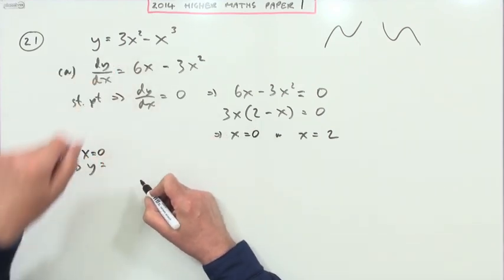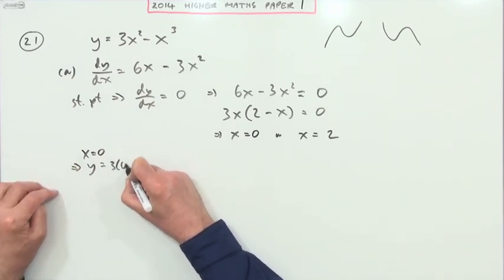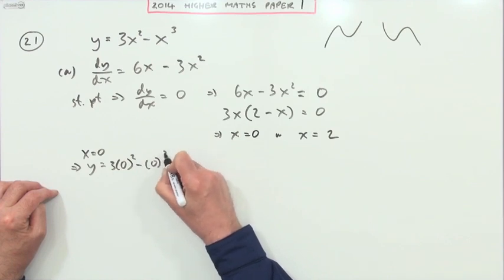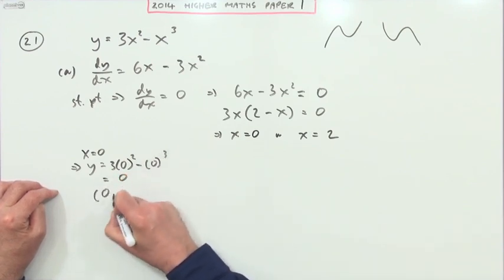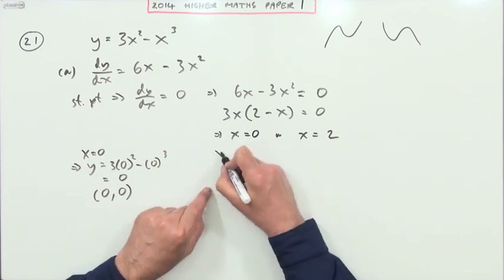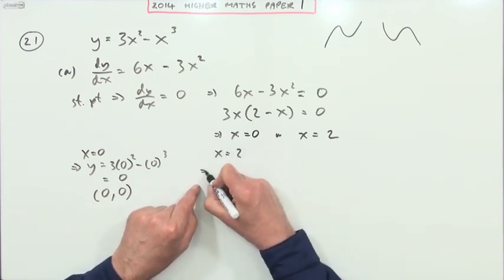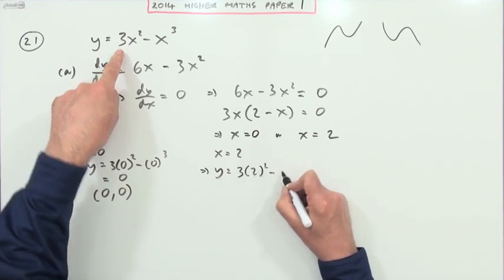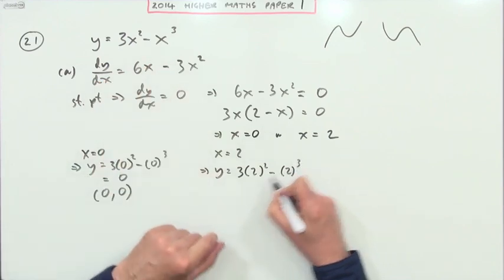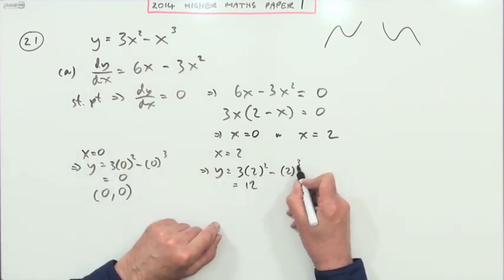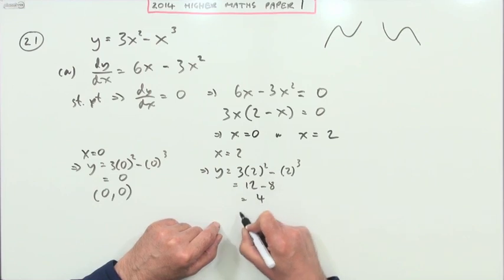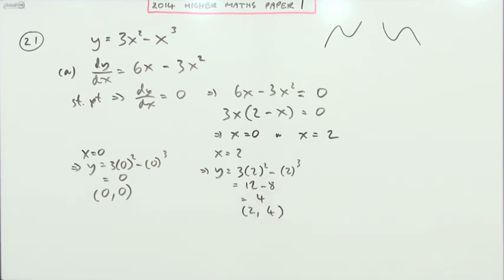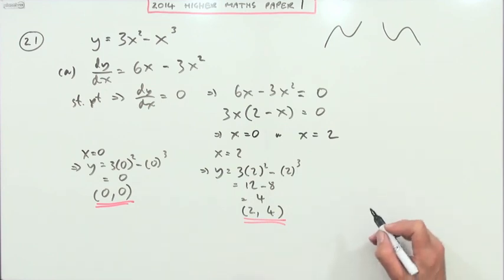Now we need the y-coordinates. If x equals zero, substituting into the equation gives y equals zero, so there's a stationary point at the origin. If x equals two, y equals three times two squared minus two cubed — that's three times four minus eight, which is twelve minus eight, giving four. So the stationary points are at (0, 0) and (2, 4).